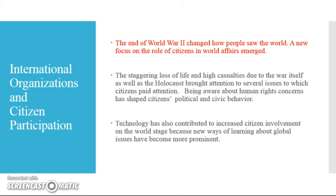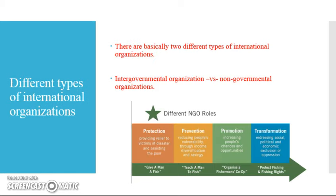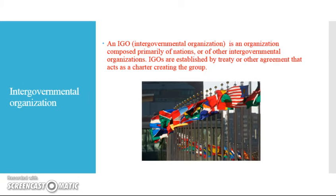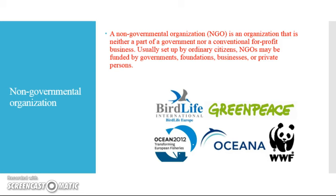We're going to see a large number of international organizations created right after World War II. There are basically two different types: intergovernmental organizations (IGOs) and non-governmental organizations (NGOs). IGOs are made up primarily of countries or nations themselves, established through a treaty or charter agreement between those countries. NGOs, on the other hand, are not part of the government and are not for-profit businesses — think of them more along the lines of charities. They can take government funds, foundation funds, and business funds.